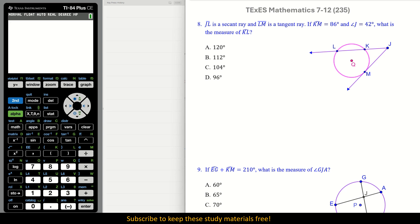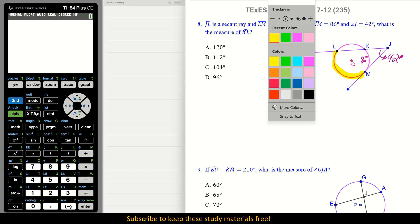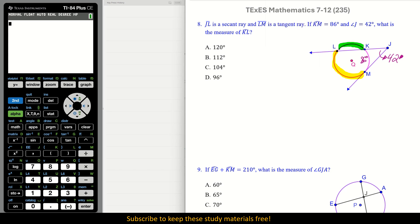Number 8. Segment JL is a secant ray and LM is a tangent ray. If arc KM is 86 degrees, so this arc is 86, this arc right here. And angle J is equal to 42 degrees. What is the measure of KL? We need to be careful. First, we're finding this arc in yellow. Then, to actually answer the question, we need the green. Right now, all we know is the very smallest arc. All we know that that is, that is 86. So we can actually read that.